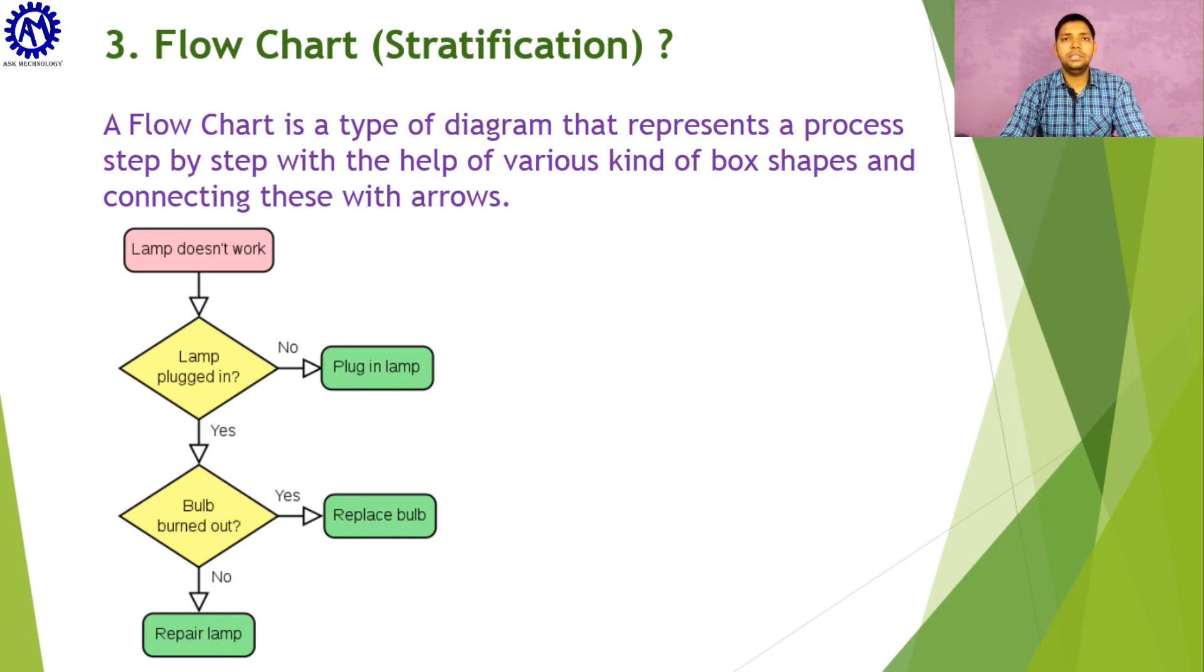After this, let us talk about flowchart, which is also known as stratification. Stratification means distribution. Flowchart is a type of diagram which represents any process step by step with the help of various kinds of box shapes and connecting these with arrows.